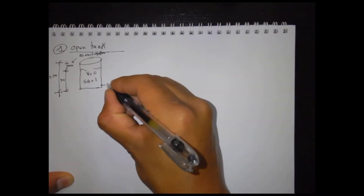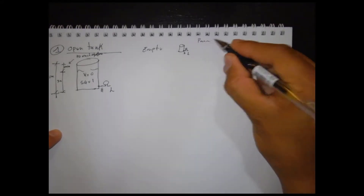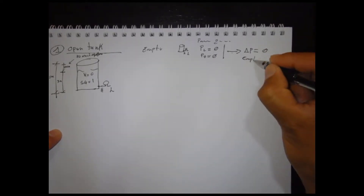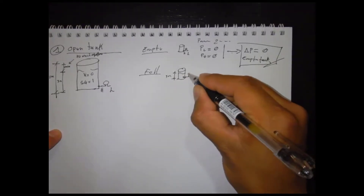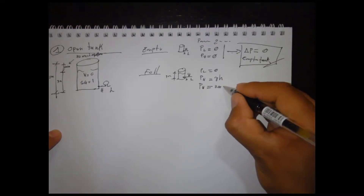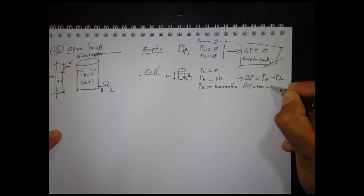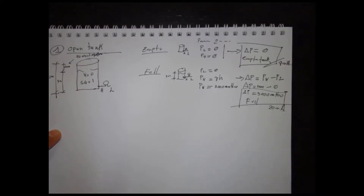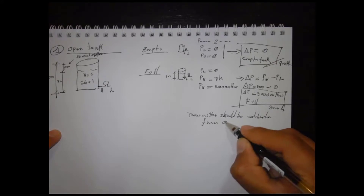If the tank is empty, the pressure on the L side is zero and the pressure on the H side is also zero. If the tank is full, the pressure on the L side is zero and the pressure on the H side is equal to 3000 mm of water. Then the differential pressure read by the transmitter is equal to 3000 mm of water for a full tank, and that will correspond to 20 mA. The transmitter should be calibrated from zero to 3000 mm of water.